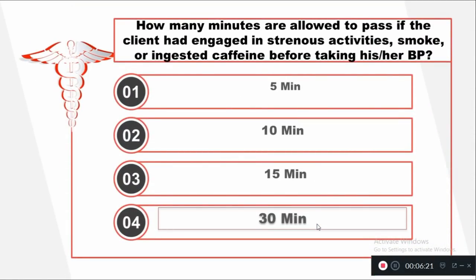Question number eight: How many minutes must pass if a client has engaged in strenuous activities, smoked, or ingested caffeine before taking his or her blood pressure? Option one: 5 minutes. Option two: 10 minutes. Option three: 15 minutes. Option four: 30 minutes. The correct answer is 30 minutes minimum before taking the blood pressure.